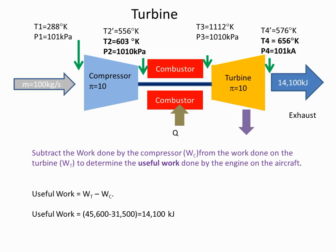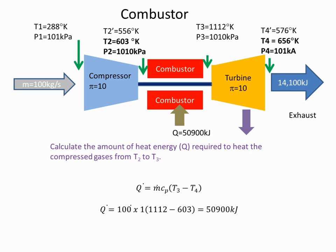So as before, the useful work is the work done by the turbine minus the work done by the compressor. So the compressor is taking 31,500 kJ of work, and the turbine, this part of the engine, is taking 45,600 kJ. So 31,500 of this work is used to drive the compressor and the difference being 14,100 kJ.